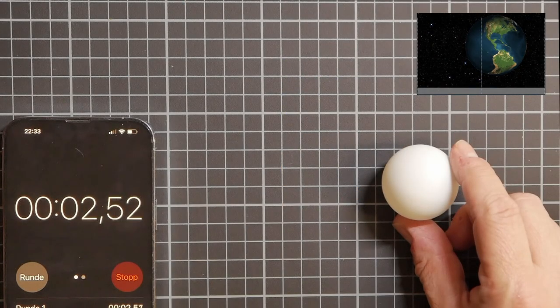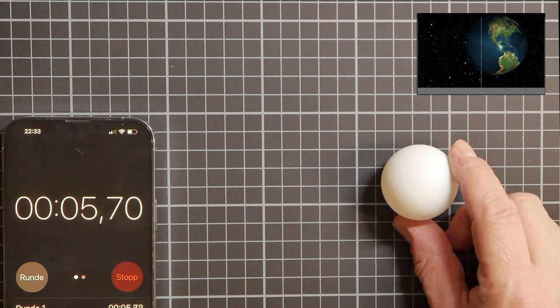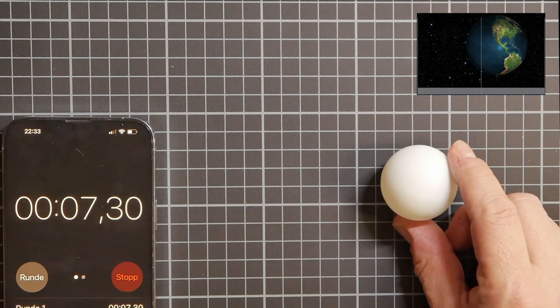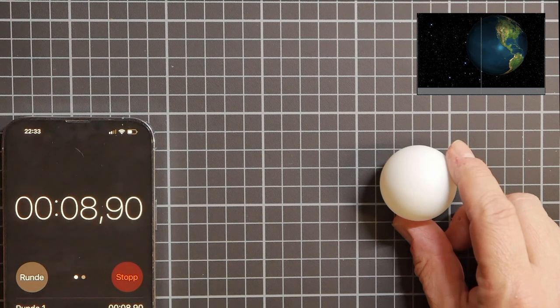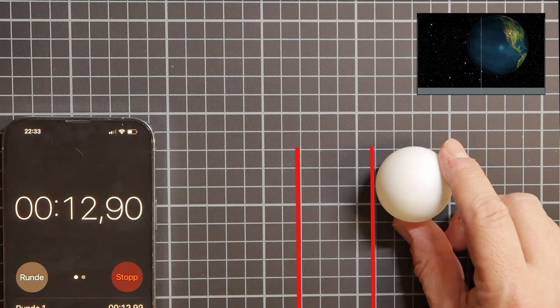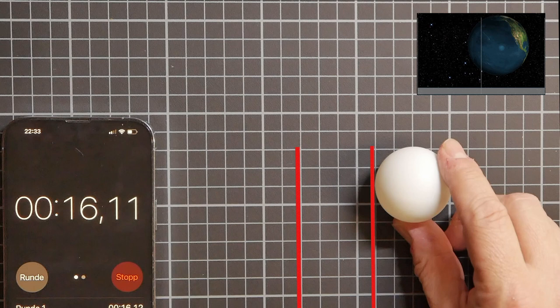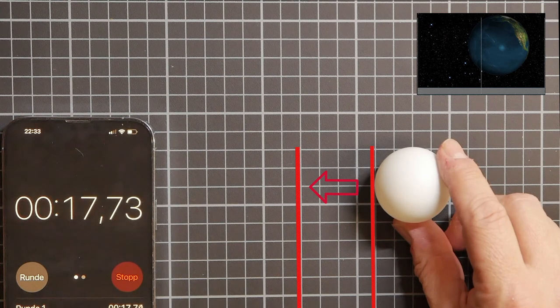An easy experiment proves how slow this actually is. All you need is a ball and a table. It doesn't matter how big or small the ball is, a marble or a ping pong ball would be enough. Now place two marks on your table, exactly as far apart as the ball is wide. Then roll the ball across the table so slowly that it takes you 7 minutes to get from one mark to the other.